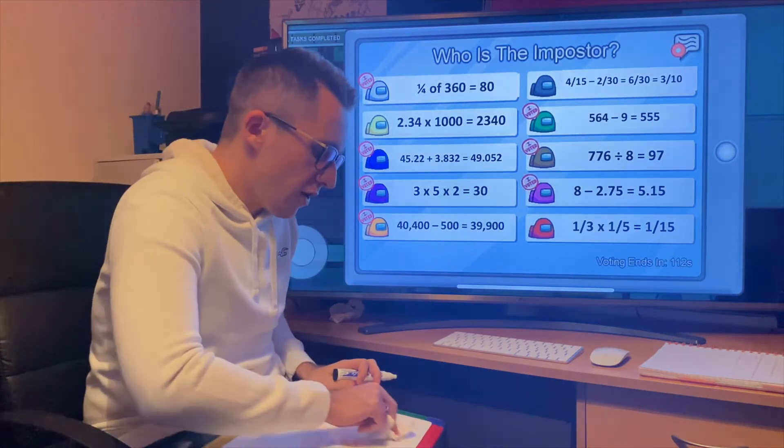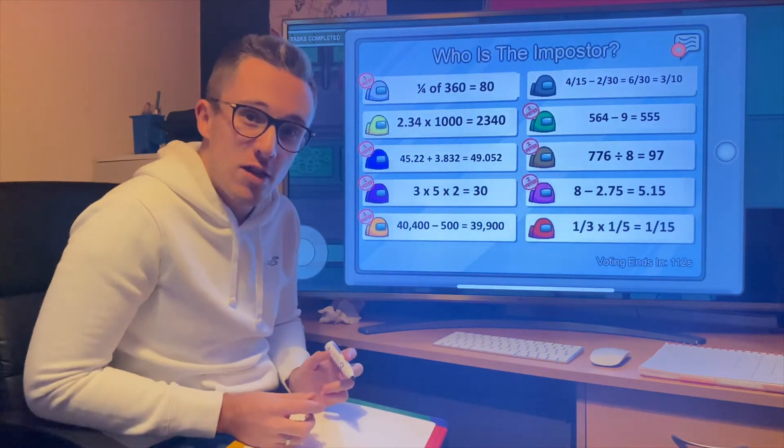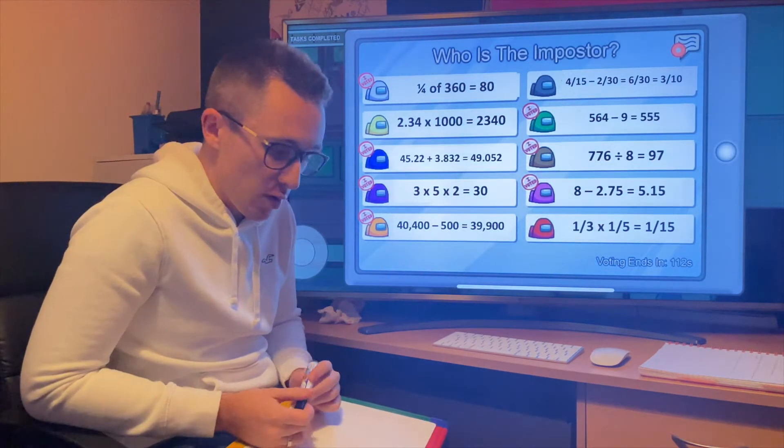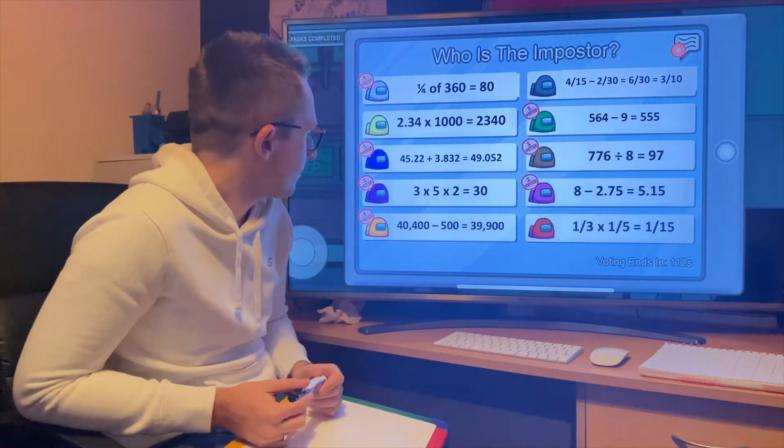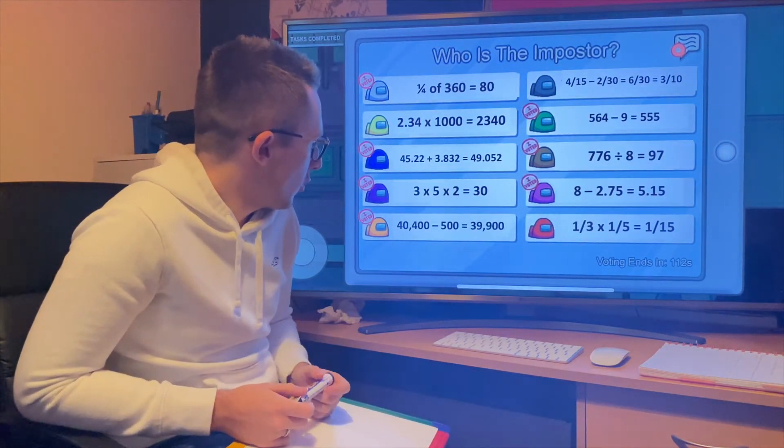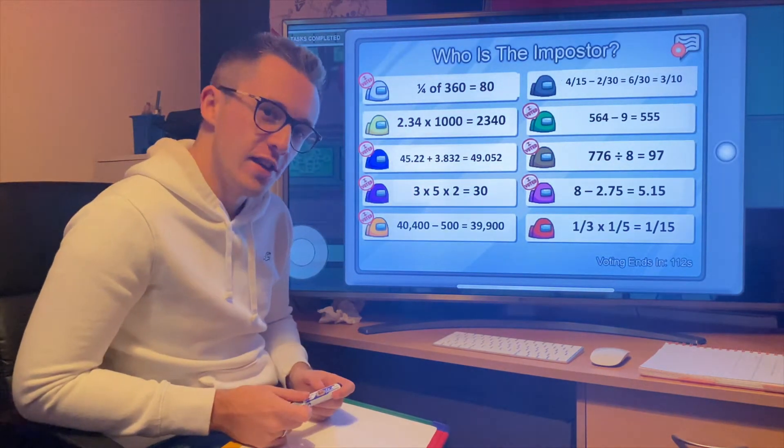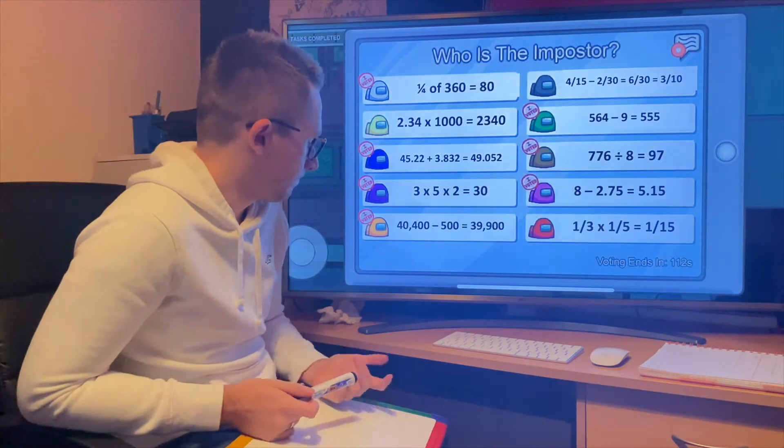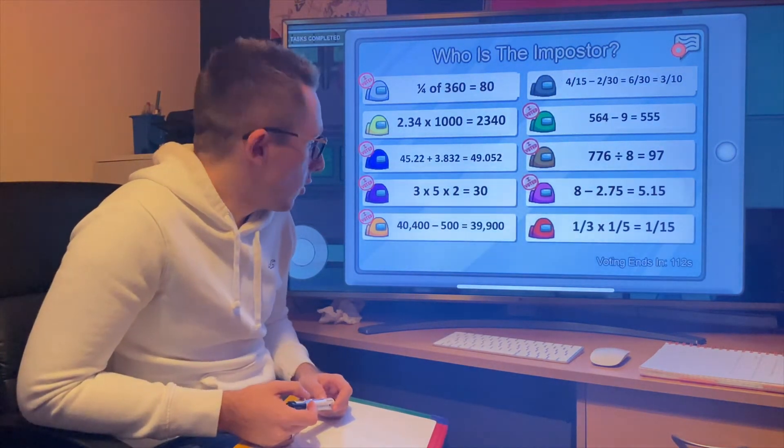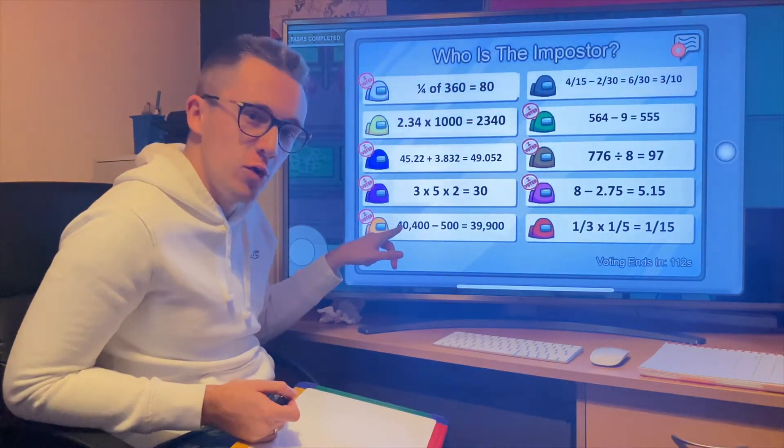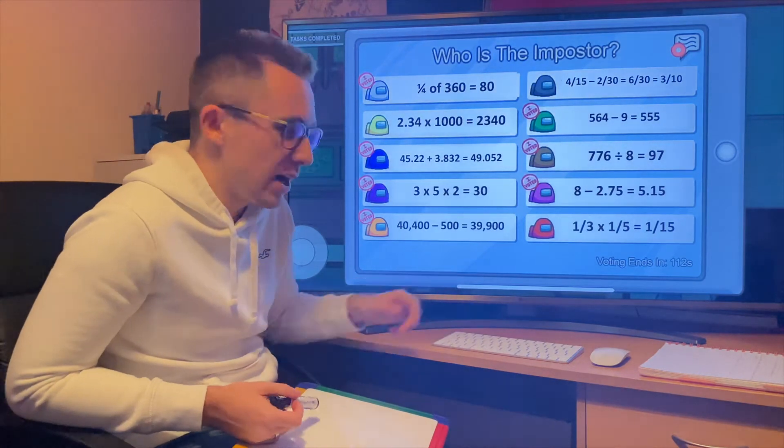Next one says 3 times 5 times 2 is 30. Doesn't matter what order we do this in. So we'll do 3 times 5, which is 15 times 2 is 30. Next one, 40,400 take away 500. Yes, it is 39,900. You could do that by column subtraction. Or you could take away 400, which goes to 40,000, and then take away another 100, which is 39,900.